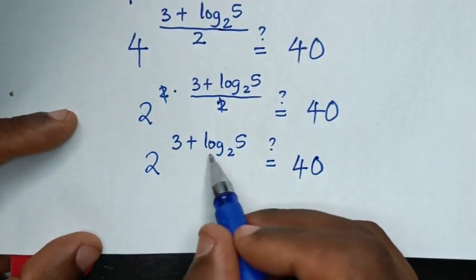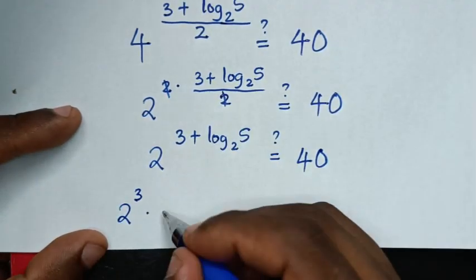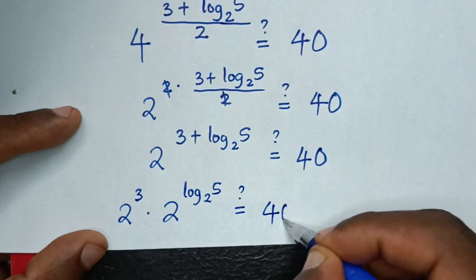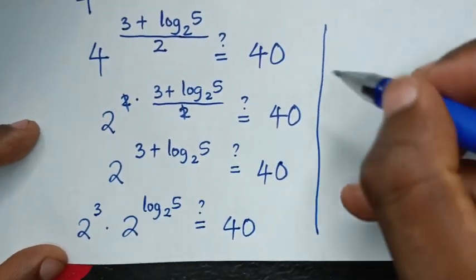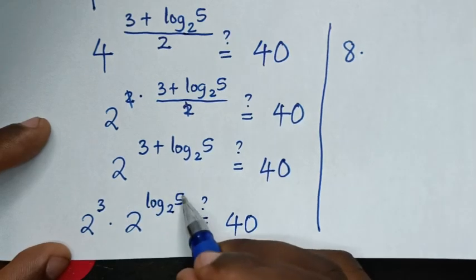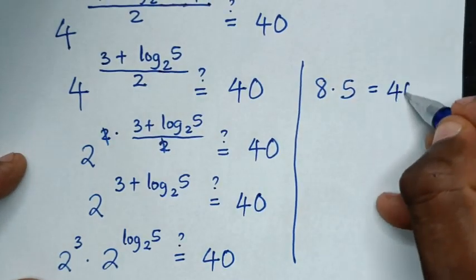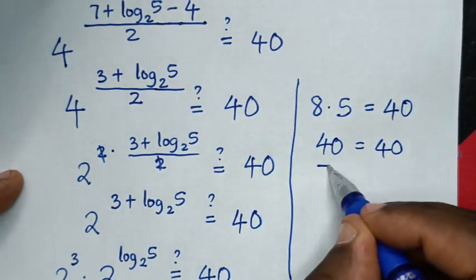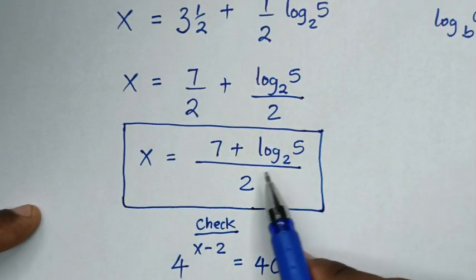Since 4 equals 2 squared, we get 2 squared to the power of (3 + log₂5)/2, which simplifies to 2 to the power of (3 + log₂5). Then 2 power of (3 + log₂5) equals 2 power of 3 times 2 power of log₂5. Now 2 power of 3 is 8, and 2 power of log₂5 equals 5. So 8 times 5 equals 40, which equals 40. Left side and right side are equal, confirming the answer x equals (7 + log₂5) / 2 is correct.